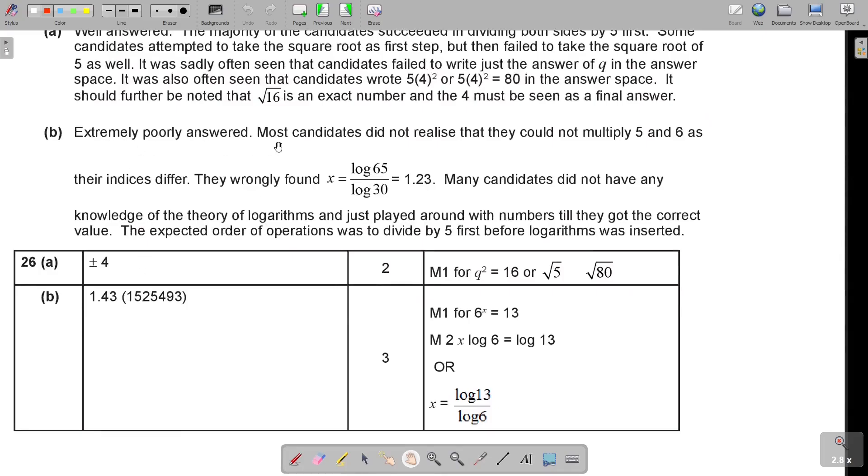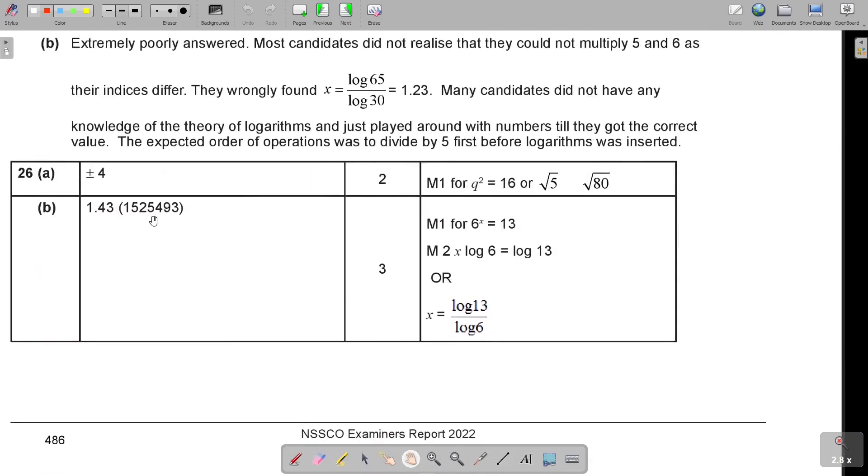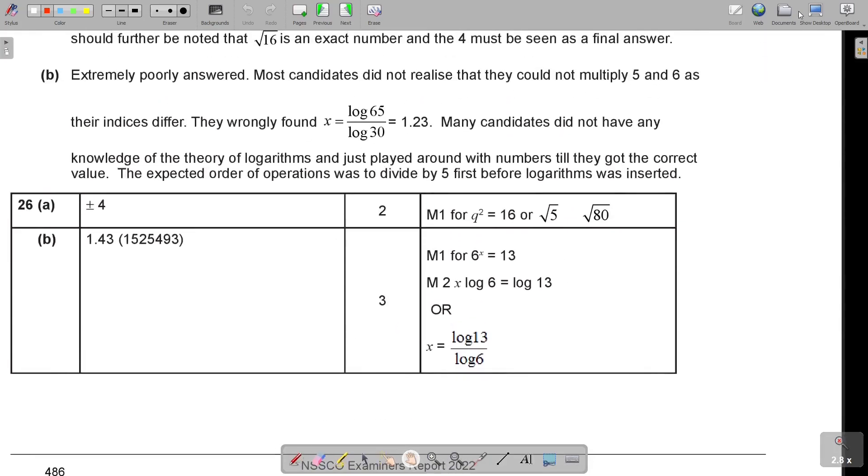It didn't seem they were so strict, but it's mathematically correct. And then this one extremely poorly answered. Most candidates did not realize that they could not multiply 5 and 6 as their indices differ. The basis must be the same. Many candidates did not have any knowledge of the theory of logarithms and just played around with numbers till they got the correct value. The expected order of operation was to divide by 5 first before logarithms was inserted. That's what we did. Did you see, full calculator display. But if you just came to that answer, just dividing 5 on both sides, you already got one mark, so show your steps. But then you had to take the X in front, then you could get two marks.